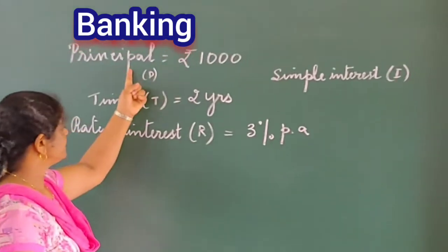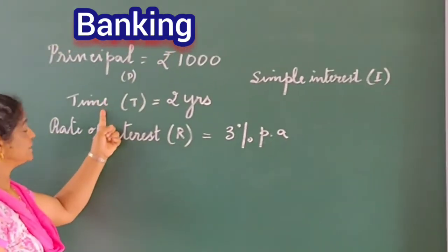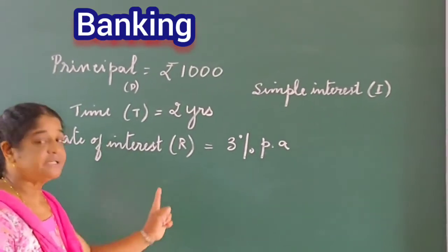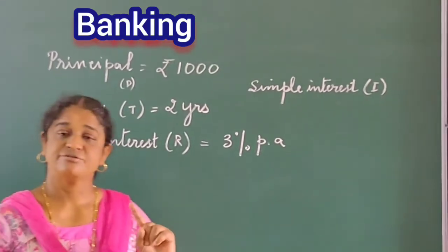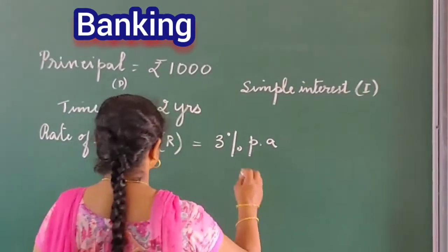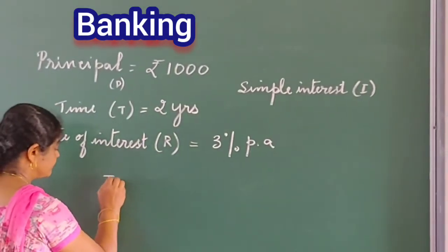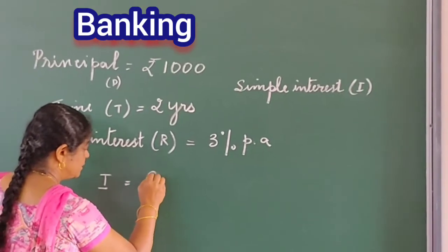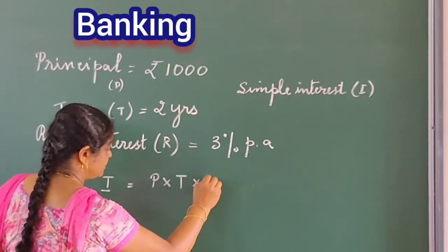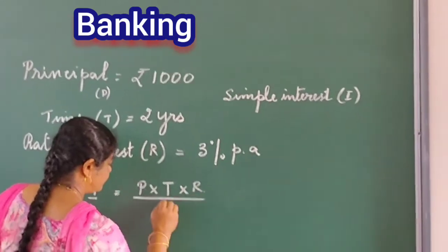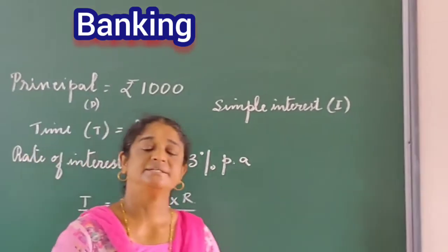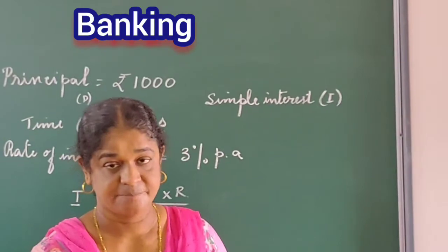So we have the principal, we have the time, we have the rate of interest. Now to calculate this, there is a formula to calculate the simple interest, and that is: I is equal to P into T into R upon 100. This is the formula to calculate the simple interest.